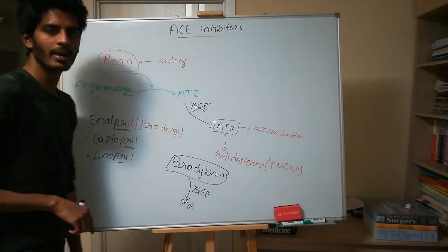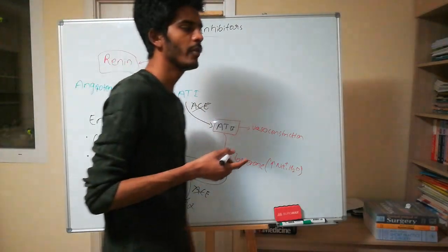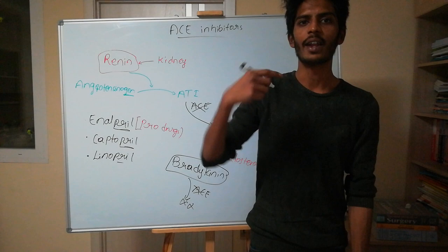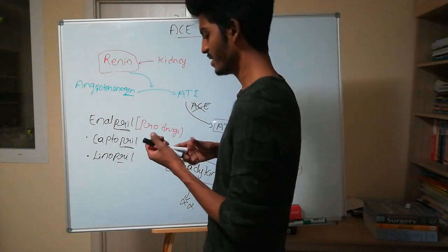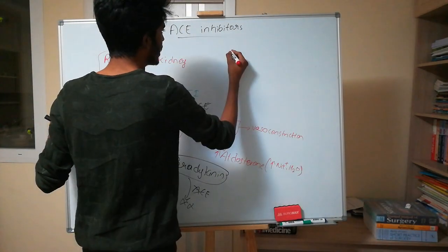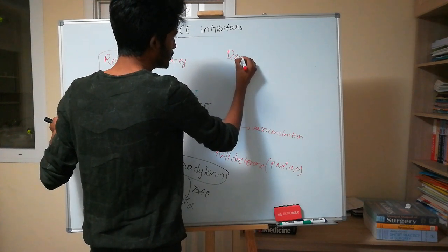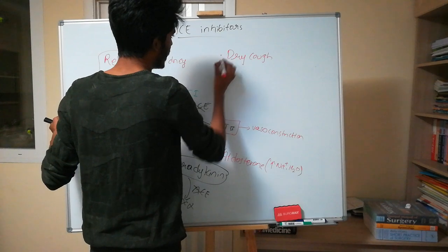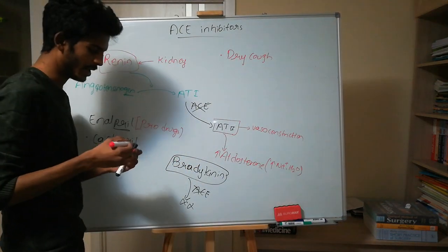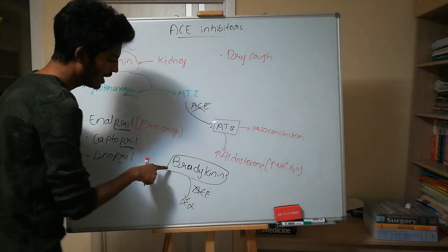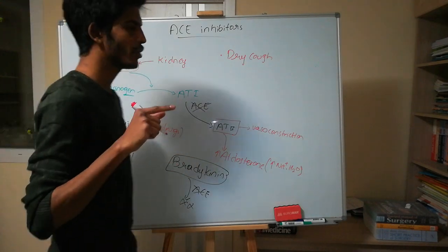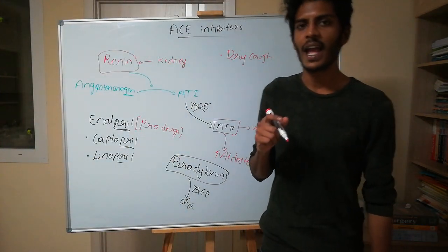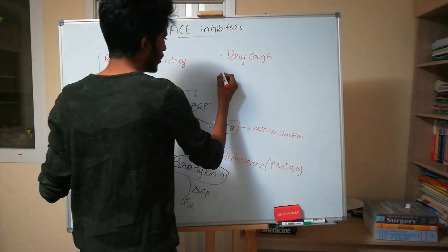When using an ACE inhibitor, since there is no ACE, there is no breaking down of bradykinin. Bradykinin is an inflammatory mediator, so it will trigger dry cough. Therefore, one important side effect caused by ACE inhibitors is dry cough.